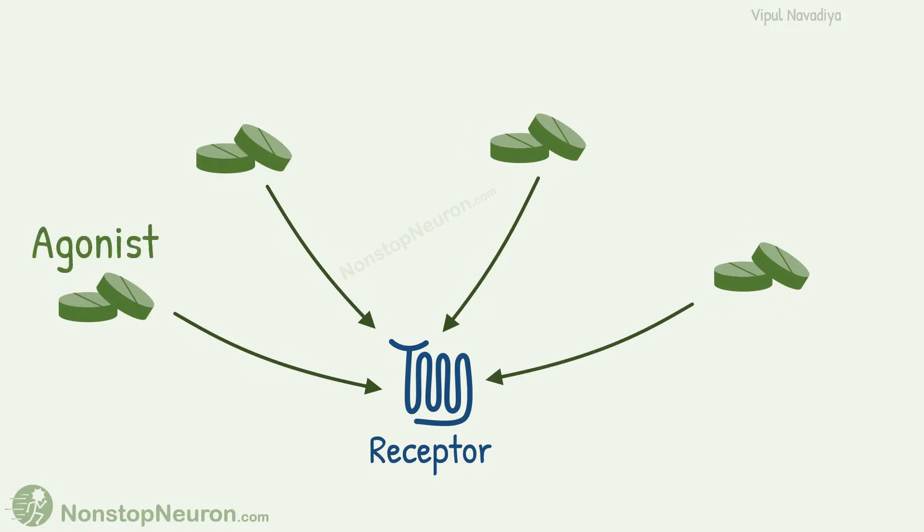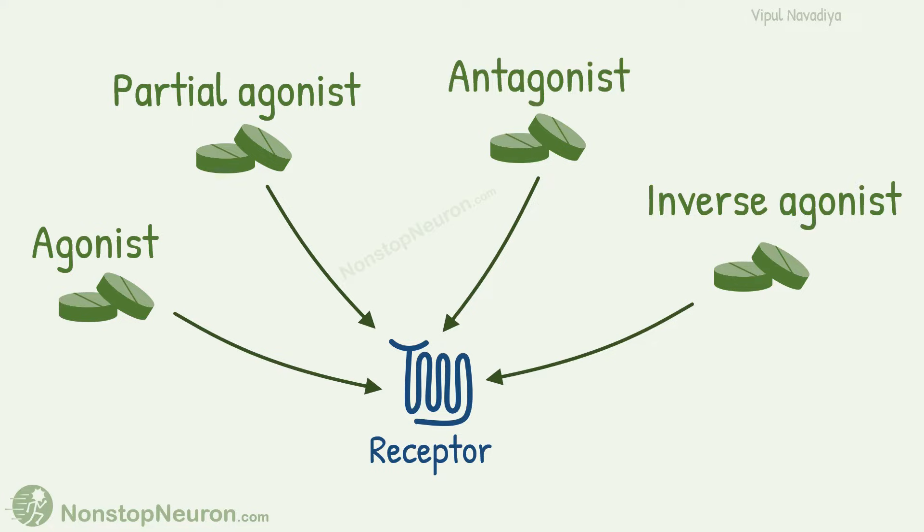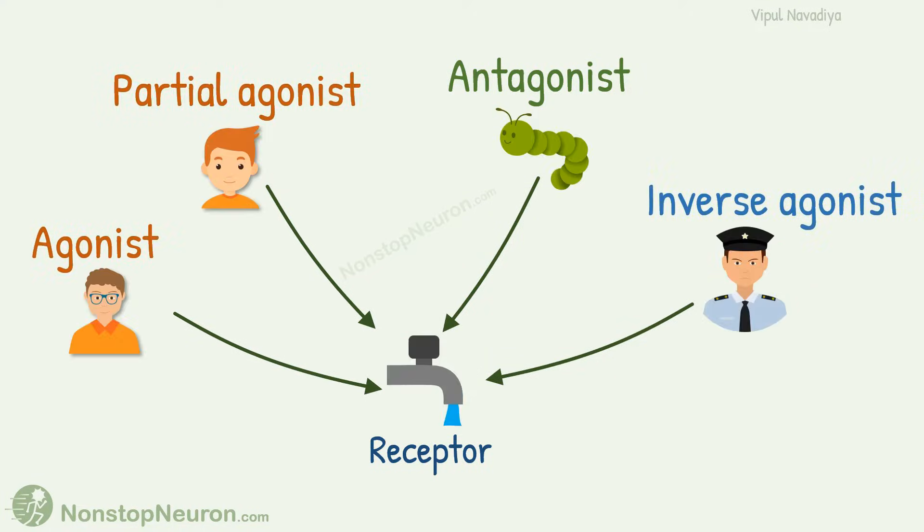Drugs on receptors can work as agonist, partial agonist, antagonist or inverse agonist. Trying to understand these concepts directly on receptors is boring and sometimes difficult. So we will understand all these concepts with analogy of tap. Let's get started.